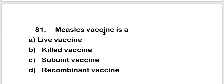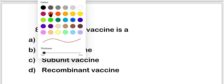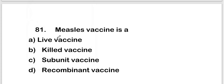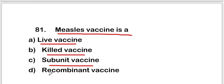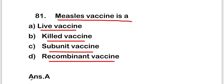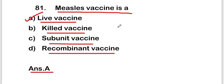Welcome to a new video on MCQs on Virology or Viruses — this is Part 5 of this video series. The first question is: measles vaccine is a live vaccine, killed vaccine, subunit vaccine, or recombinant vaccine? The right answer is option A — live vaccine. Measles vaccine is a live vaccine.